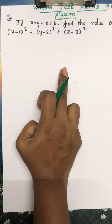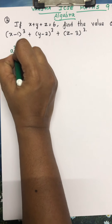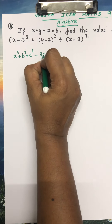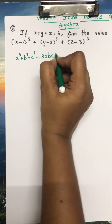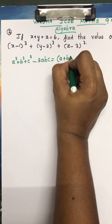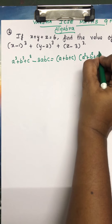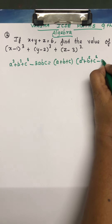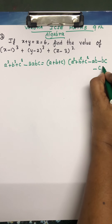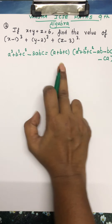I am going to write the algebraic identity first. The identity is: a³ + b³ + c³ − 3abc = (a + b + c)(a² + b² + c² − ab − bc − ca). This is the perfect identity.